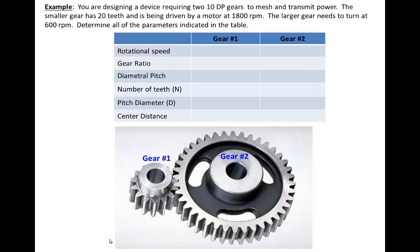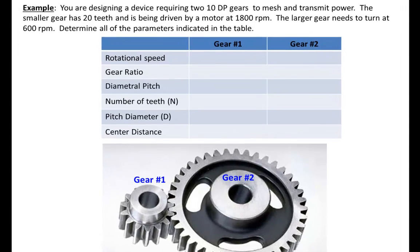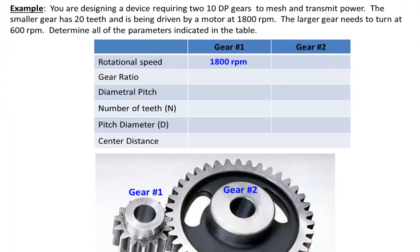Let's do a quick example problem. Suppose you are designing a device requiring two 10 DP gears to mesh and transmit power. The small gear has 20 teeth and is being driven by a motor at 1800 RPM. The larger gear needs to be turning at 600 RPM. Determine all of the parameters indicated in the table. The rotational speed of gear 1 is 1800 RPM and gear 2 is 600 RPM. Since the larger gear needs to turn three times slower, we need a gear ratio of 3 to 1.